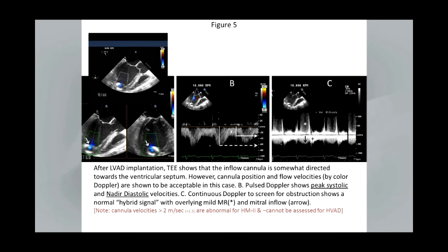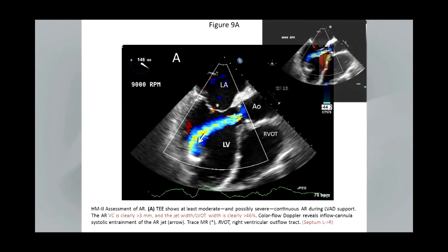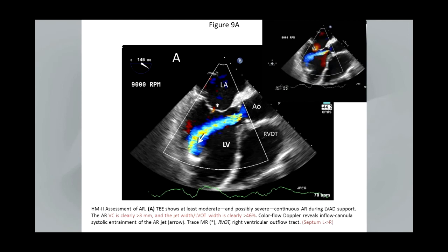Here's another patient right after LVAD implantation. You can see with color Doppler laminar inflow — the cannula position velocities are shown to be acceptable in this case. The pulsed Doppler shows a peak systolic and nadir diastolic velocity. Continuous wave Doppler to screen for obstruction shows a normal hybrid signal. Note that cannula velocities greater than 1.5 and certainly 2 meters per second are considered abnormal and might warrant separate consideration. With the HVAD device, it's really not possible to see the spectral Doppler of the inflow, but cannula position can be seen.